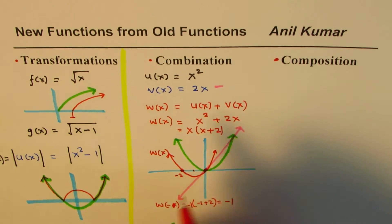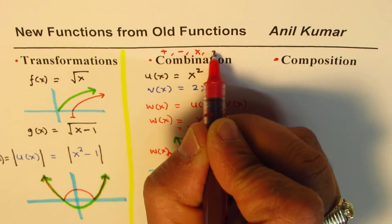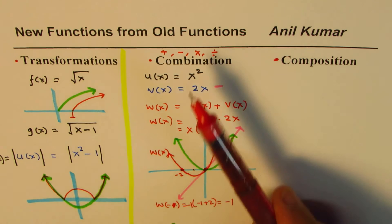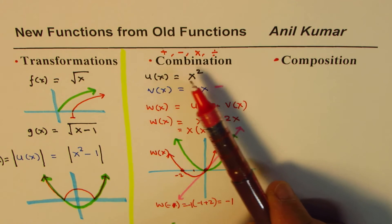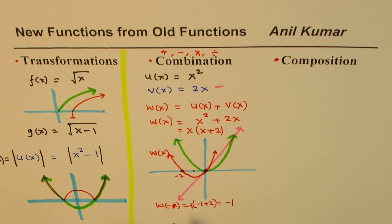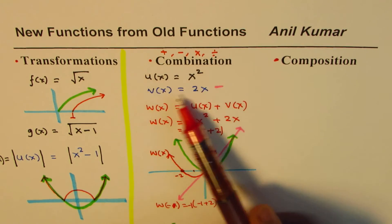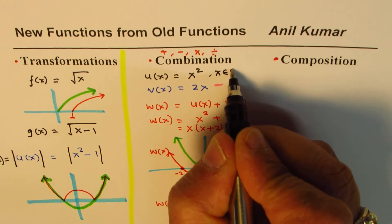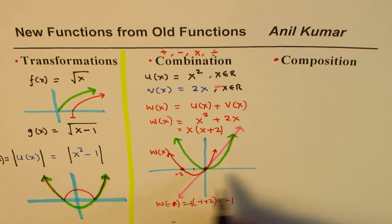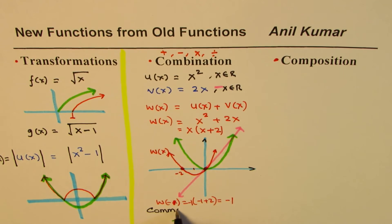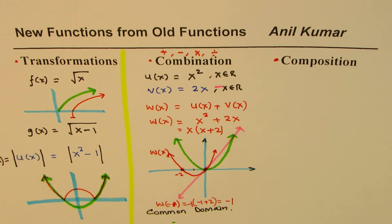The idea is that you can make combinations from existing functions using operations like addition, subtraction, multiplication, or division — all these operations can help you get a new function from existing functions. You could also combine the same function with itself to create a new function. One important thing to remember: these operations are always performed on the common domain of the functions involved.